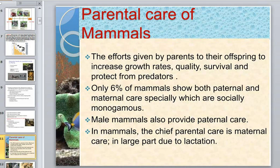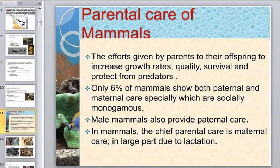Parental care in mammals refers to the efforts given by parents to their offspring to increase growth rates, quality of survival, and protection from predators. Only six percent of mammals show both maternal and paternal behavioral care, especially those that are socially monogamous.